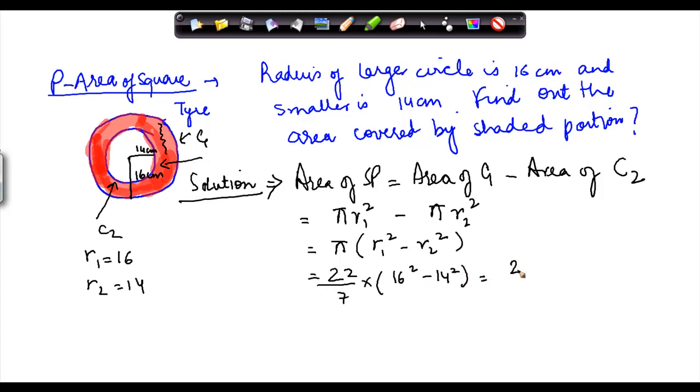Which gives us 22 by 7, 16 square. How much is 16 square? Let me do that calculation for you. 256 minus 14 square we did earlier was 196. So this will give us a difference of 70. So 22 by 7 into 70, this goes of 10, so we get 220 centimeter square.